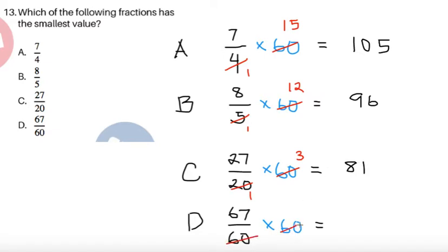Lastly, we can directly cancel 60, and this gives us 67. So we can now easily compare 105, 96, 81, and 67. Obviously 105 is the largest; however, we asked for the smallest. Since 67 is the smallest, we're going to answer D.